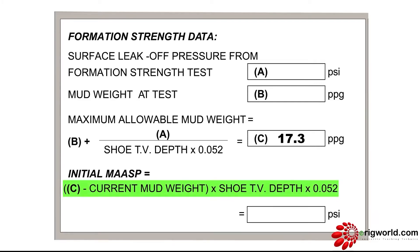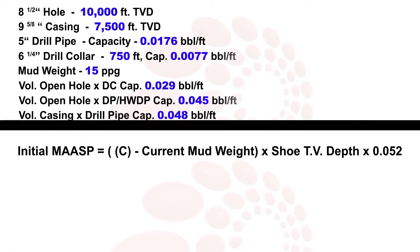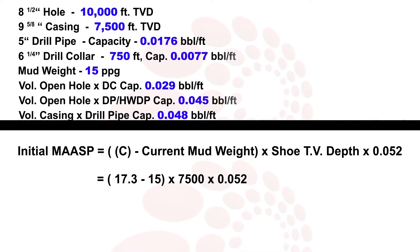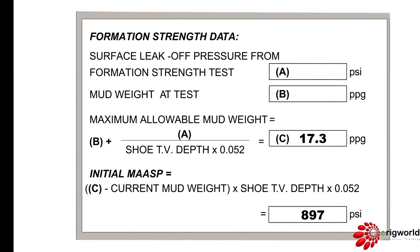Using the initial mass formula — C minus current mud weight, multiplied by SHU-EVD, multiplied by a constant — if I put in the values: C is 17.3, current mud weight is 15 ppg as given, and SHU-EVD is 7500. Solving this equation gives 897. Once I get 897 as initial mass, I put this number down in the kill sheet as my initial mass.